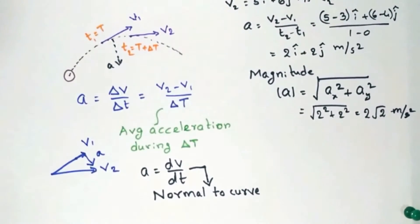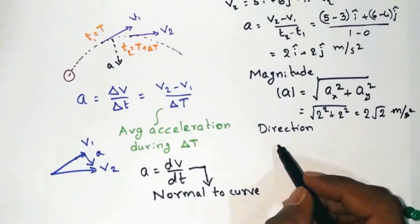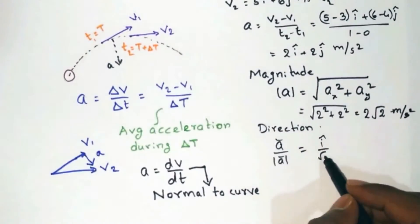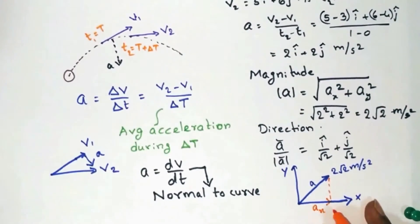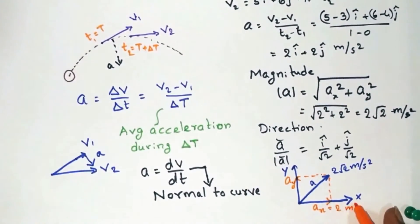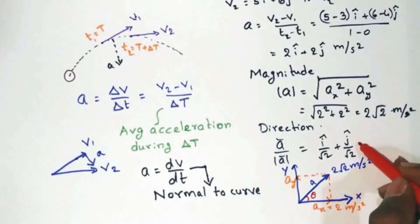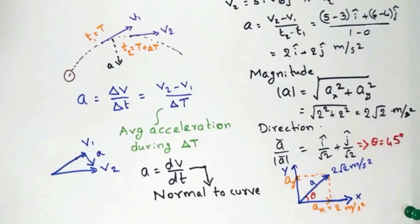And in order to find the direction, we will use the unit vector. To find the unit vector, the acceleration vector should be divided by its magnitude, which results in i-cap by root 2 plus j-cap by root 2. Now this can be graphically represented like this, and the angle made with the x-axis can be found out to be 45 degrees from the unit vector.